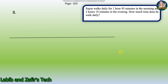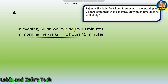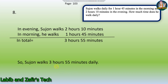This is our eighth word problem. Shuzun works daily for 1 hour 45 minutes in the morning and 2 hours 10 minutes in the evening. How much time does he work daily? This is a time question from page 103. In the evening Shuzun works 2 hours 10 minutes, and in the morning 1 hour 45 minutes. Adding: 5 plus 0 is 5, and 4 plus 1 is 55 minutes, and 2 plus 1 is 3 hours. So, 3 hours 55 minutes. Shuzun works 3 hours 55 minutes daily. This is our eighth word problem.